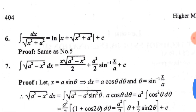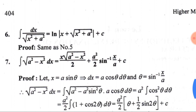The sixth integral is ∫dx/√(x²+a²) = ln|x + √(x²+a²)| + C. Similarly, by substituting x + √(x²+a²) = j, we can prove this result.